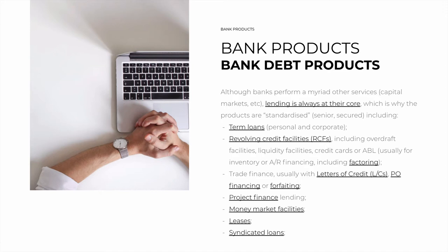The big difference between a term loan and a revolving credit facility is that in a term loan, you obtain one quantity of capital for one maturity — for example, 50 million for five years. In a revolving credit facility, you have a limit — for example, 5 million for five years — and you can borrow and repay as many times as needed. The simplest example is a credit card. Usually, all other types of debt are some form of these two.